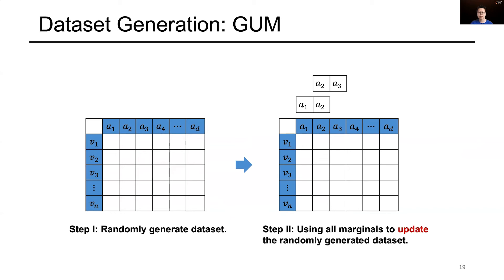Then, for the selected marginal table a2 and a3, we do the same thing and so on and so forth, until the distribution of the dataset is consistent with all marginals. Note that when we update marginal table a2 and a3, it will inevitably destroy the consistency established by marginal a1 and a2. To address this problem, we propose to go over all marginals multiple times. We have proposed many other techniques to improve the convergence. We refer the audience to our paper for more details.